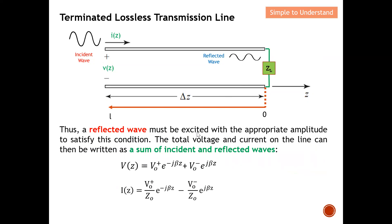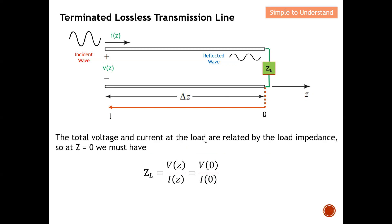Thus a reflected wave must be excited with the appropriate amplitude to satisfy this condition. The total voltage and current on the line can then be written as a sum of incident and reflected wave components. I have proved these two equations in the Part 5 series discussion on transmission line theory — please review that video if needed. The voltage and current are each a sum of an incident wave term and a reflected wave term.